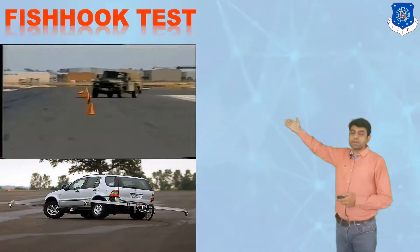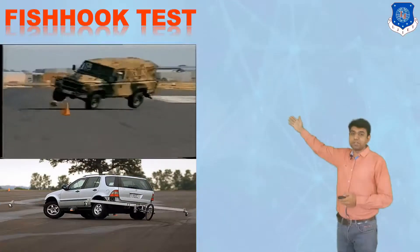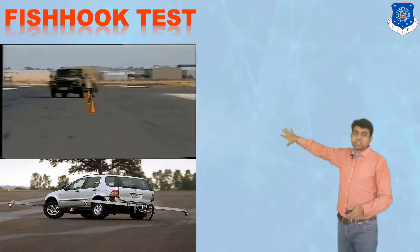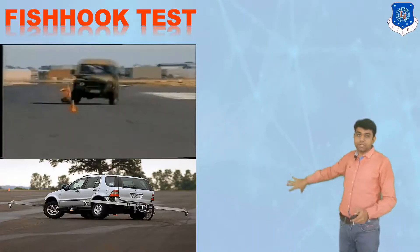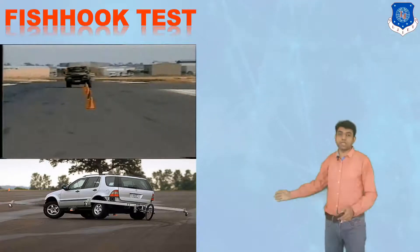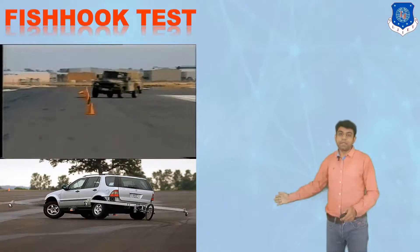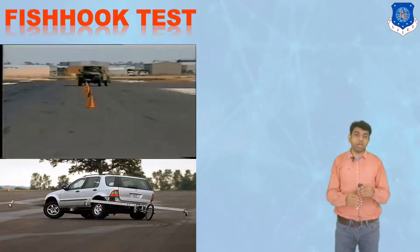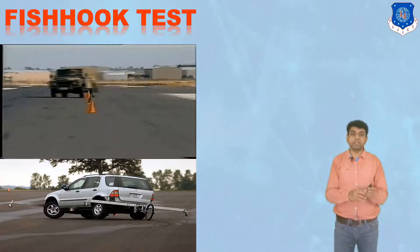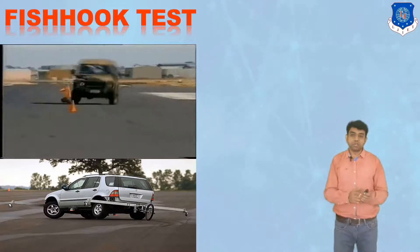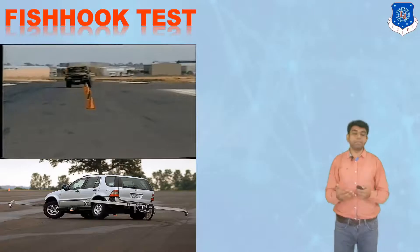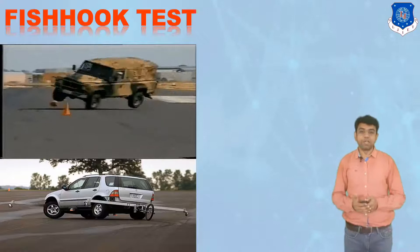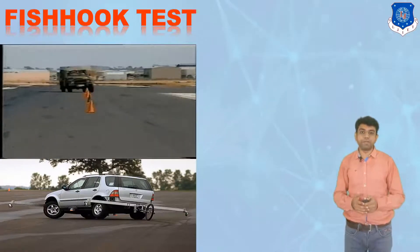As shown in this particular image, the vehicle is allowed to travel in a zigzag path and we need to check the stability. The vehicle is attached with different sensors, as shown in the diagram below, and from those sensors we can get the value of how much ground clearance is maintained when the vehicle travels in that zigzag way. From that, we can get the idea about the stability of the vehicle. This is how the fish hook test is carried out to evaluate the stability of the vehicle.